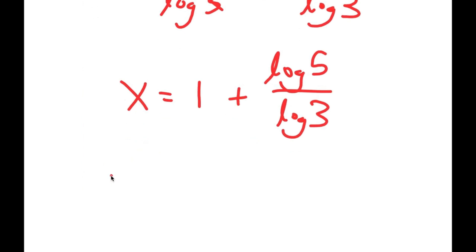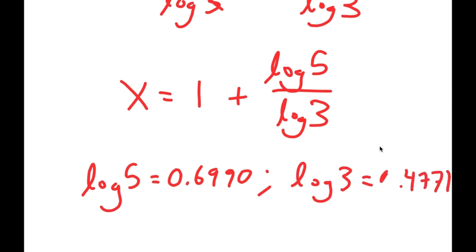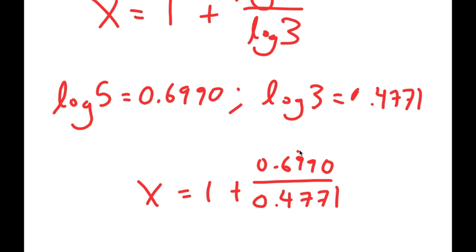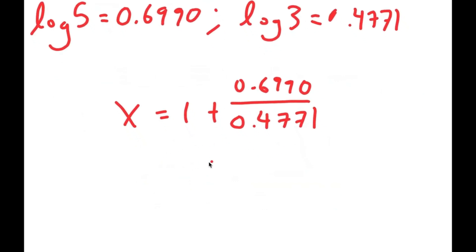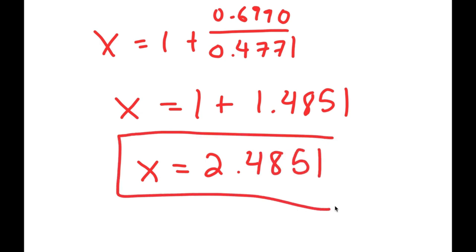Now log 5 is equal to 0.6990 and log 3 is equal to 0.4771. So this is going to equal 1 plus 0.6990 over 0.4771. Now 0.6990 over 0.4771 is equal to 1.4851, and 1 plus 1.4851 is equal to 2.4851. So this is my value of x.